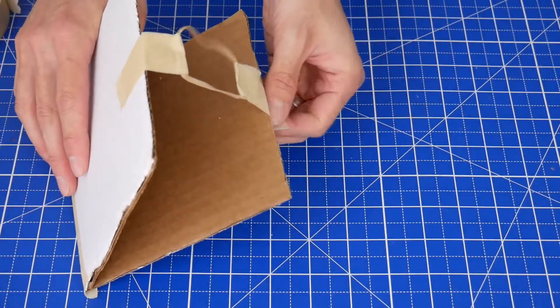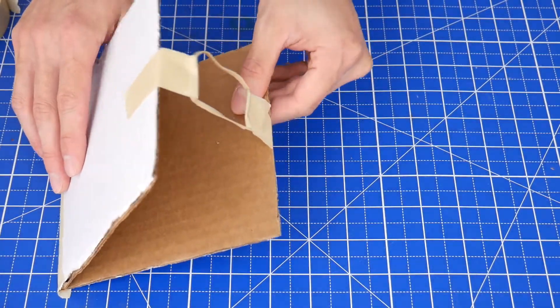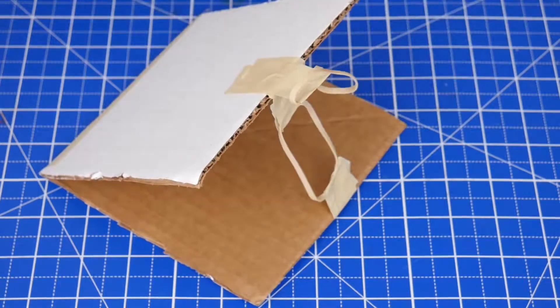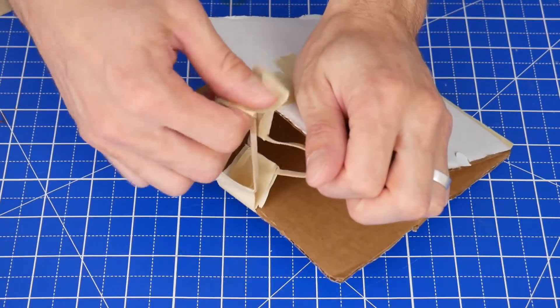Repeat and tape the rubber band to the other side of the cardboard as well. One rubber band will work, but I recommend adding on two rubber bands to make the frog jump even higher.